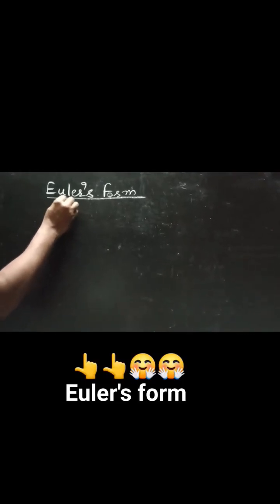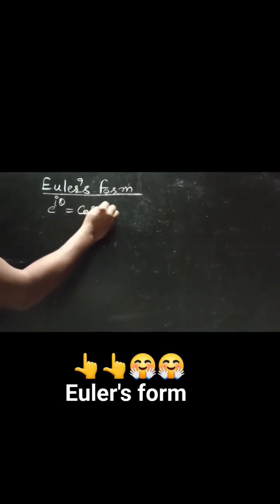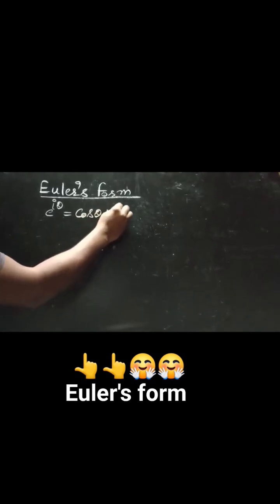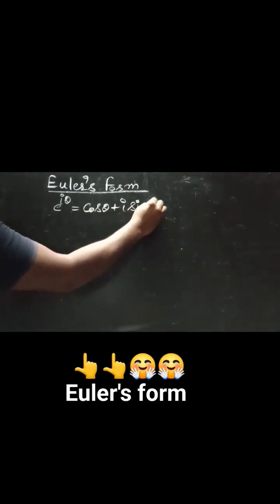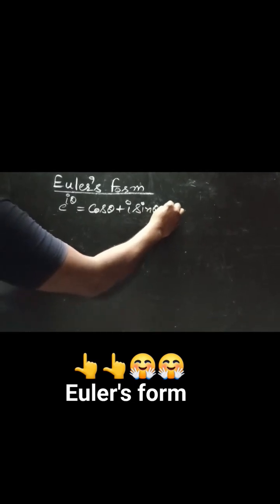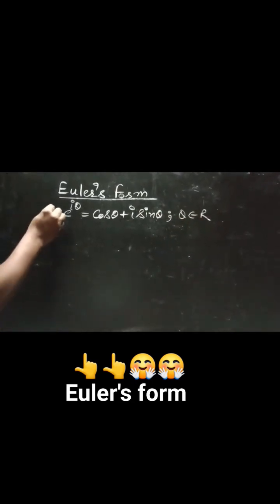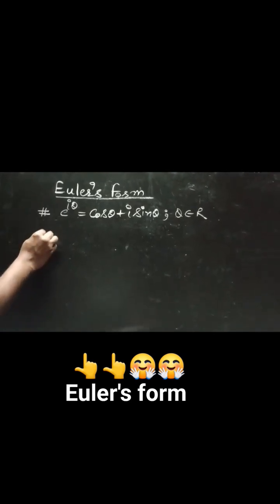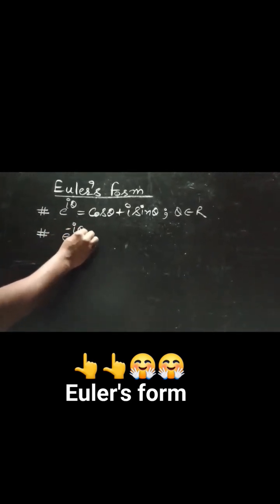Euler's form of a complex number, cos θ + i sin θ, can be written as e raised to power iθ. A unimodular complex number can be expressed as e^(iθ) = cos θ + i sin θ, where θ belongs to the real numbers. Now, e raised to power −iθ is cos θ − i sin θ.